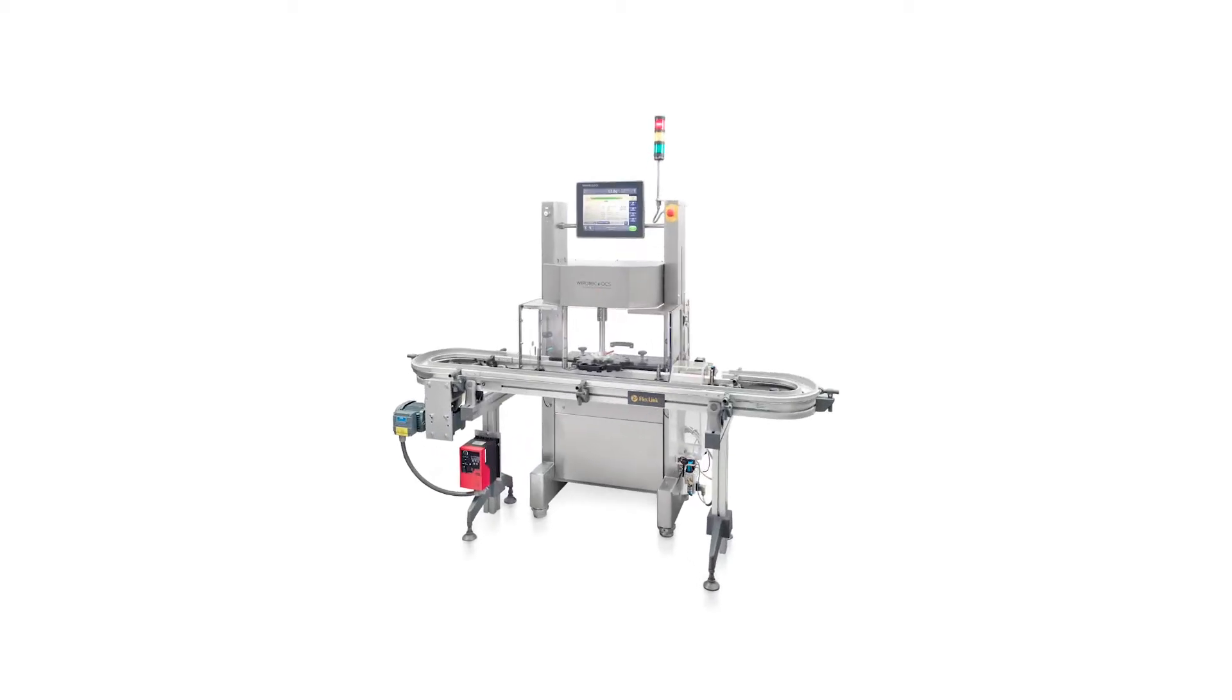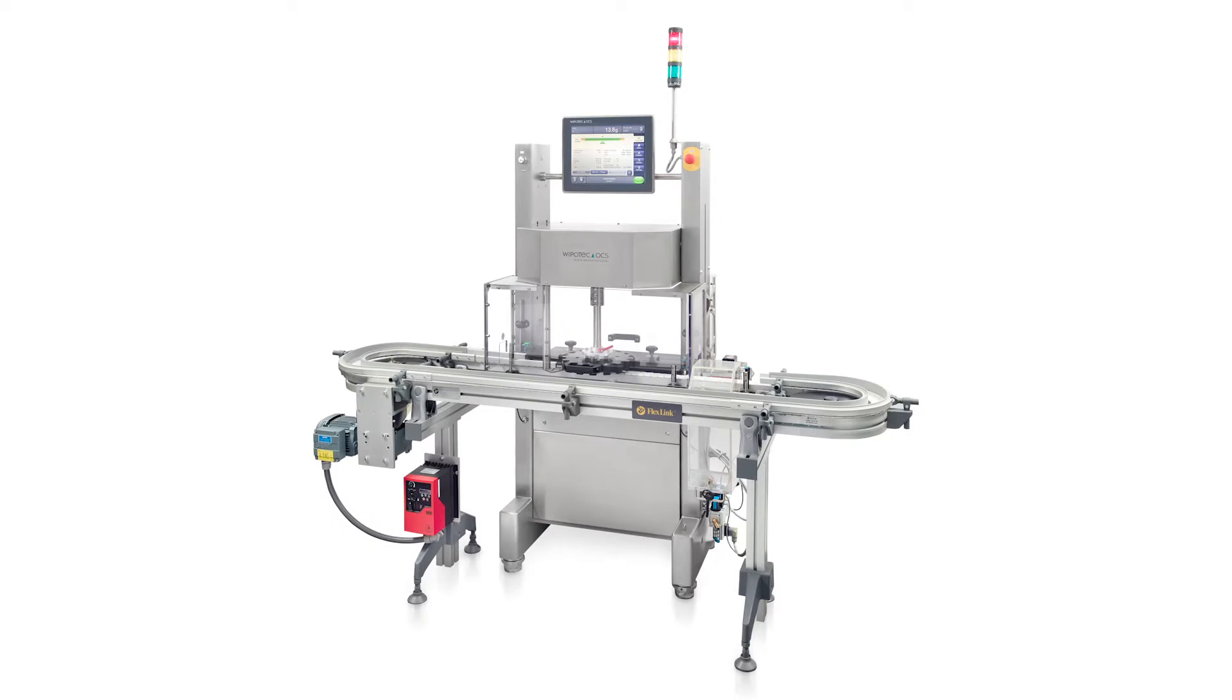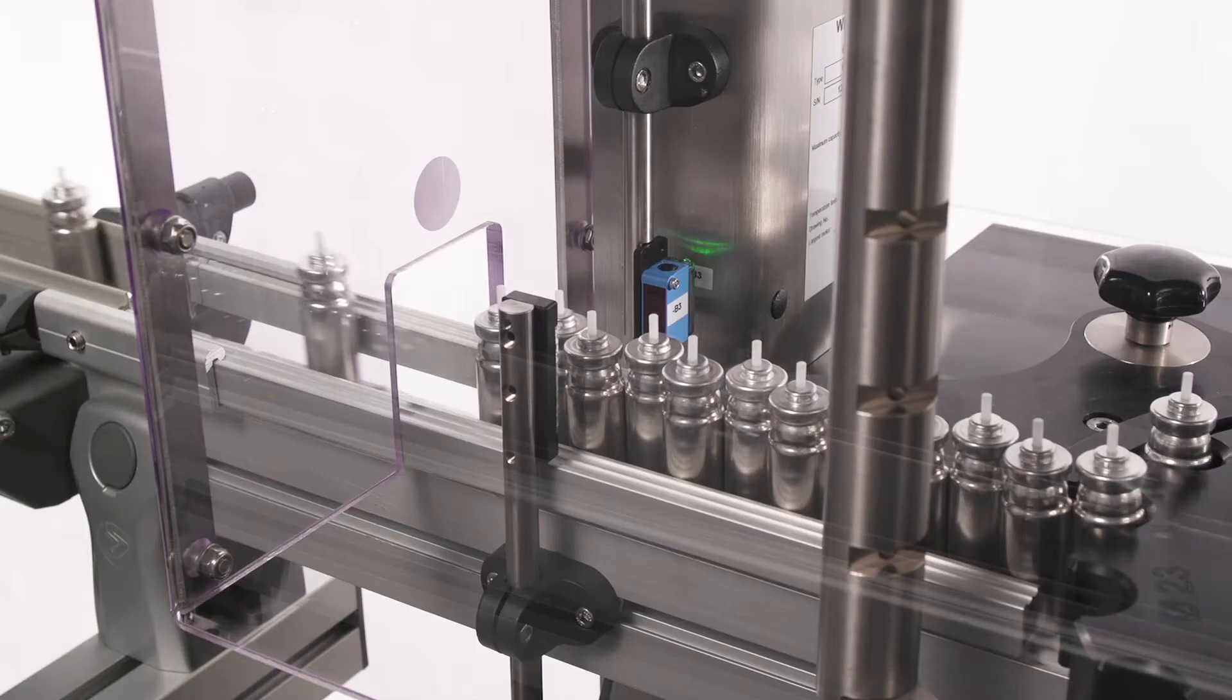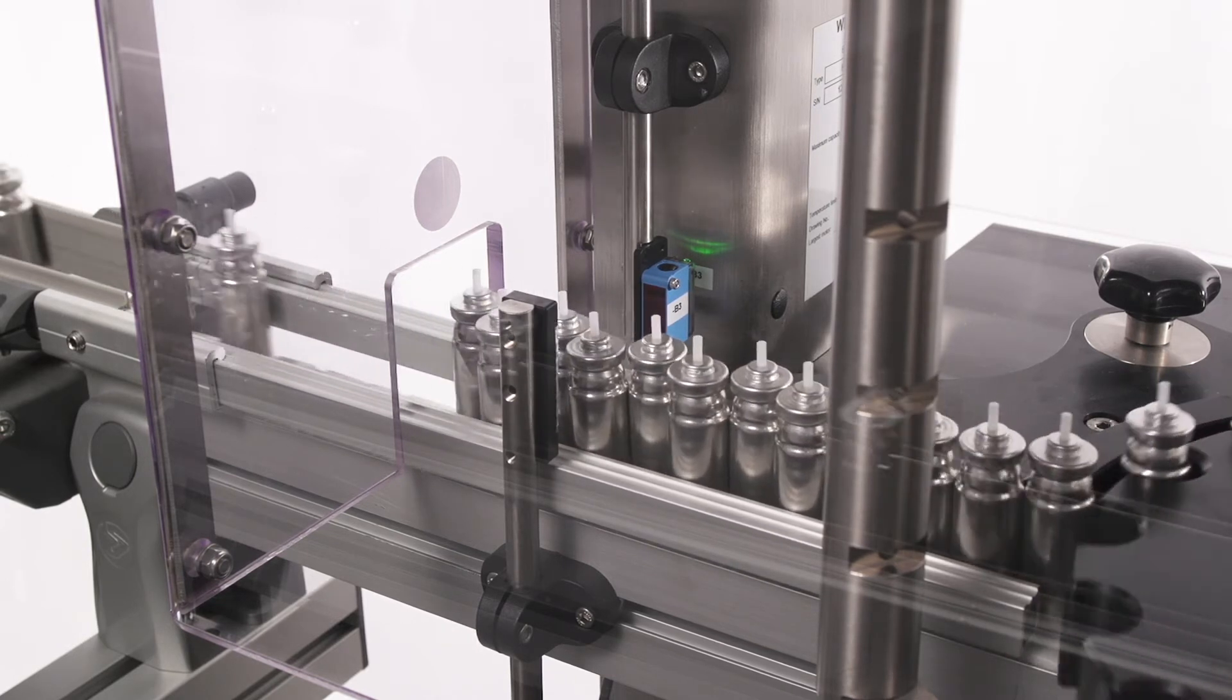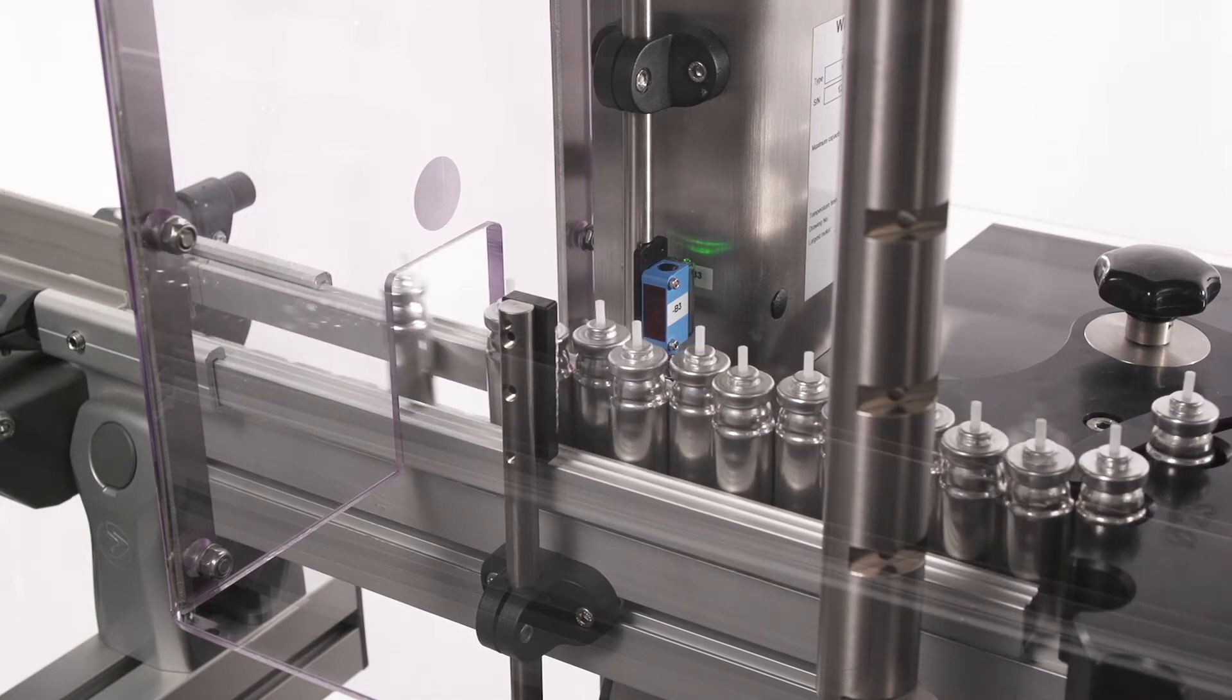The HCAIS checkweigher design is ideal for weighing cylindrical products like aerosol cans and vials. These product types have some unique positioning challenges if you try to run them through a belted checkweigher. The machine's rotary star wheel you can see solves these positioning challenges.